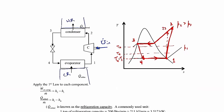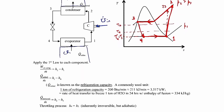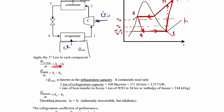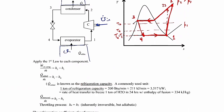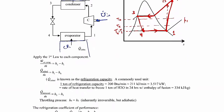We analyze these cycles using the first law applied around each component, which you've done many times. You can apply the first law around the compressor to find the power required, and around the evaporator to find the heat added. For refrigeration cycles, that heat added is known as the refrigeration capacity. A common unit, especially for air conditioning, is a ton of refrigeration capacity — for example, a three-ton air conditioner.